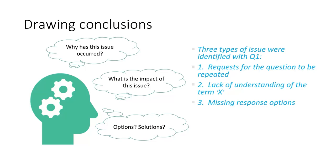Once you have assessed the impact of an issue, consider options for solutions. A question that is too long-winded could be fixed by shortening it or breaking it into smaller, simpler sentences. Lack of understanding of a specific term due to technical language could be fixed by using a different term or including a definition — look at the language your respondents used in the interviews to ensure it matches their mental models. For missing response options, see what response option was considered missing and add it to your question.